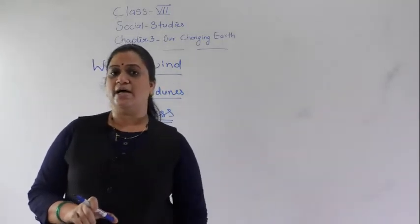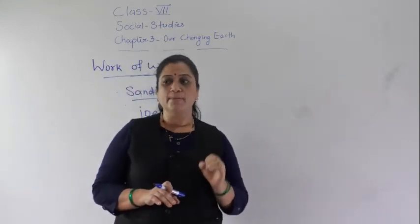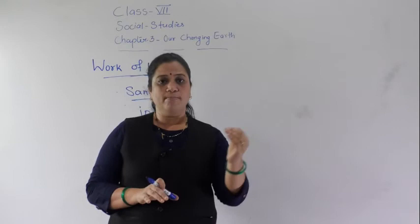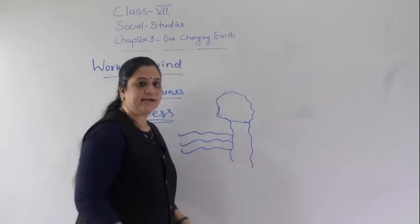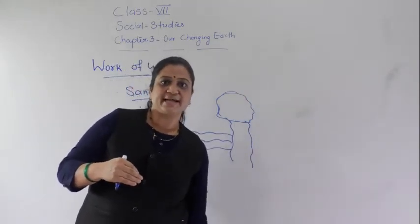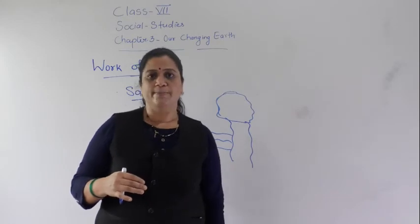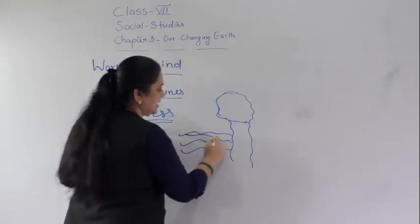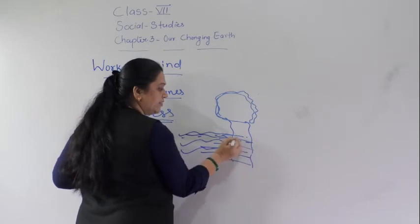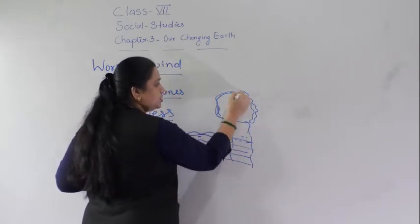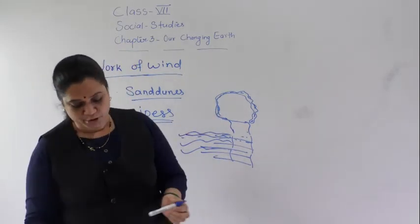These two structures — sand dunes and loess — are formed by the wind. The third one is mushroom rocks. When the wind blows, it strikes the lower part of the surface, similar to how wind strikes the lower part of our body when we are standing. The wind erodes the lower surface of the rock, thus forming the shape of a mushroom. Rocks formed in this shape are called mushroom rocks.